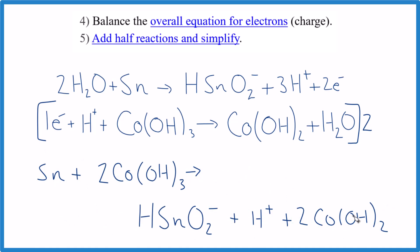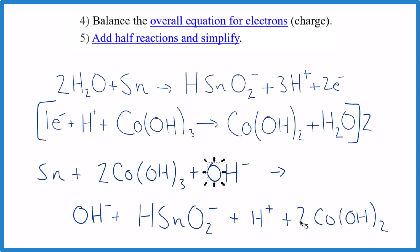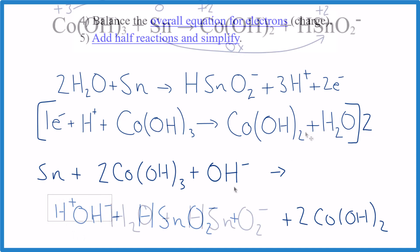But remember, we want it in basic solution. Right now we have this H+ which means it's still acidic. We need to add a hydroxide ion here because that's going to cancel out the H+, and we have to do that on both sides. This OH⁻ and the H+ are an acid and a base—they're going to add together and form H₂O. This is our final balanced redox reaction in basic medium.